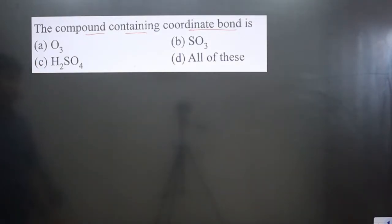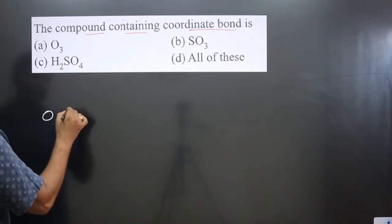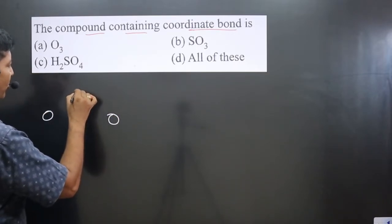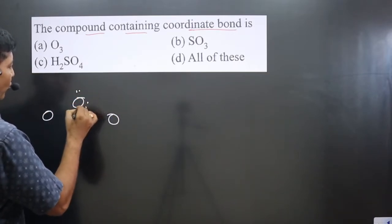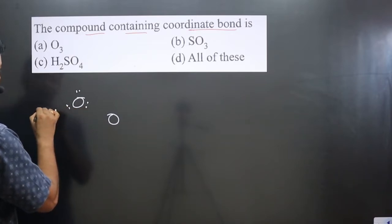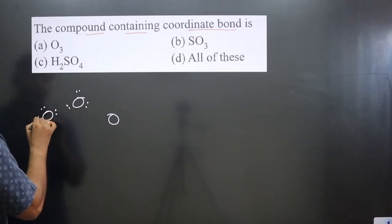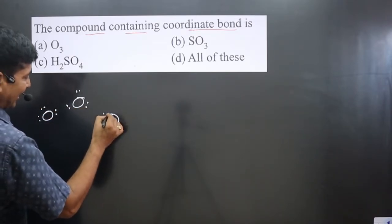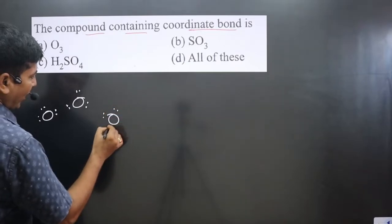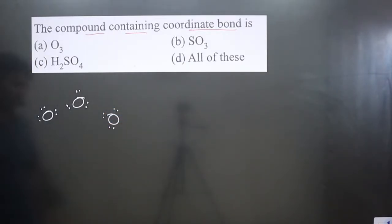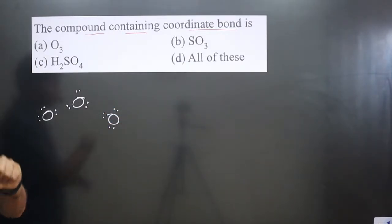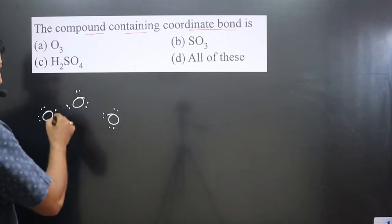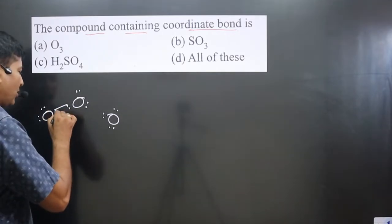The first compound is ozone (O₃). Three oxygen atoms are there, and each oxygen has six valence electrons. In general, oxygen forms two bonds.